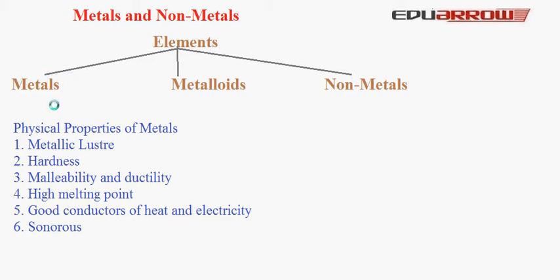Metallic Lustre: All the metals have a shining surface — this property is called Metallic Lustre. Generally the metals are hard, although there are some exceptions like potassium and sodium, which can easily be cut with a knife.